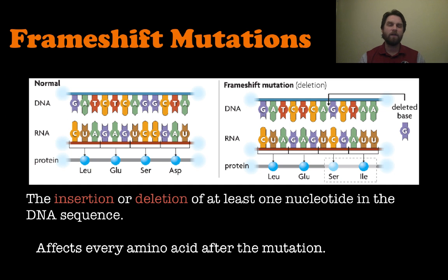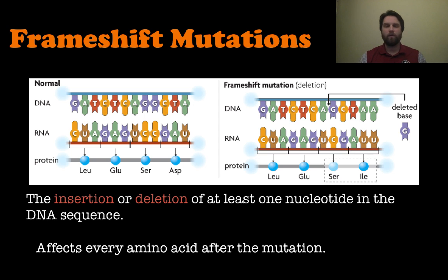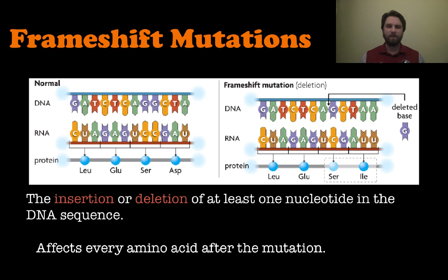The other type of mutation is a frameshift mutation — that's when you get an insertion or deletion of one or more nucleotides in a DNA sequence. Wherever you insert or delete that base, it affects every amino acid after that point. For example, if you take out one of the guanines, as shown on the right-hand side, every amino acid after that point has been changed — the whole sequence is now shifted to make something completely different.